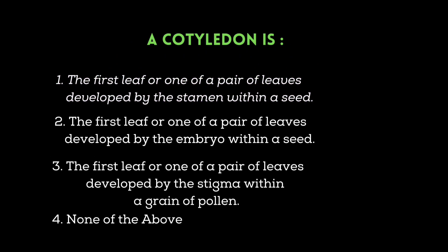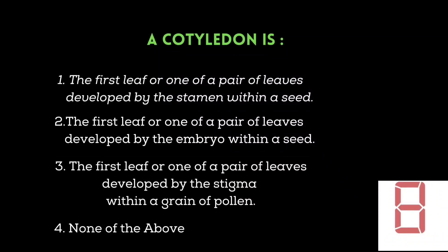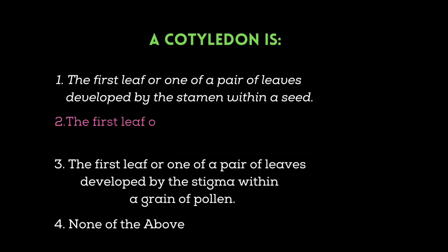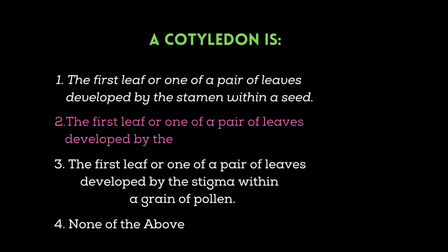A cotyledon is: the first leaf or one of the pairs of leaves developed by the stamen within a seed. The first leaf or one of the pairs of leaves developed by the ember within a seed. The first leaf or one of the pairs of leaves developed by the stigma within a grain of pollen. None of the above. Your time starts now. The correct answer is: the first leaf or one of the pairs of leaves developed by the ember in a seed.